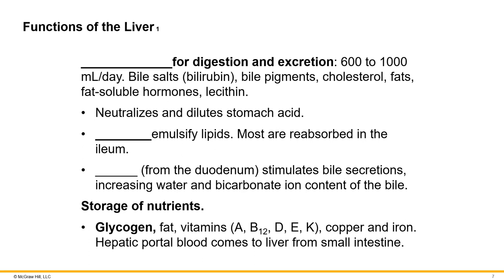The liver is a versatile organ. It secretes bile, which is important for digestion and excretion. It also neutralizes stomach acid. Bile salts called bilirubin emulsify lipids — emulsification takes a larger lipid molecule or glob and chops it into smaller globs. The liver is also a storage organ for glycogen, a type of carbohydrate stored in the liver and muscles, as well as a storage site for fat, different types of vitamins and minerals.